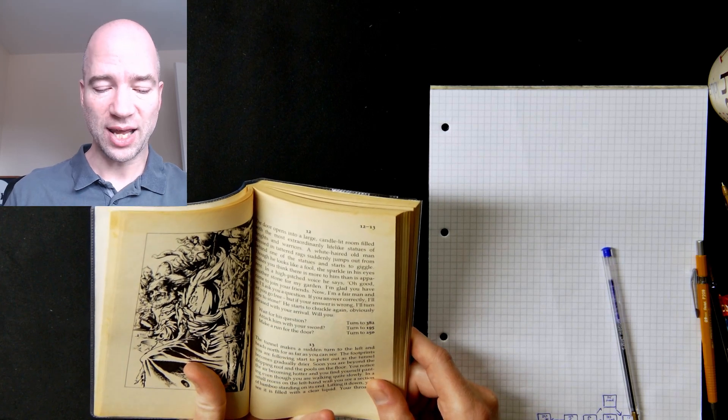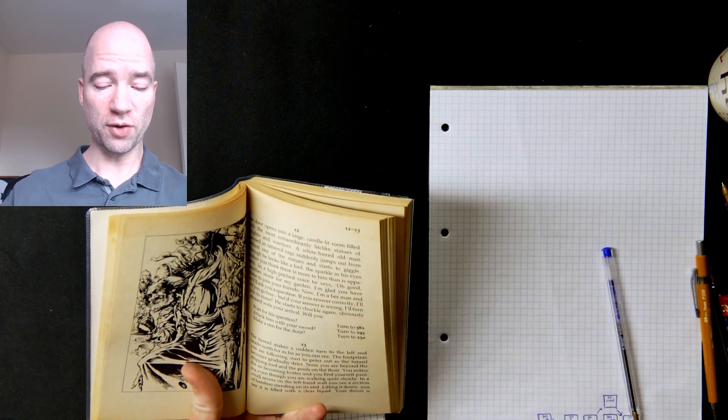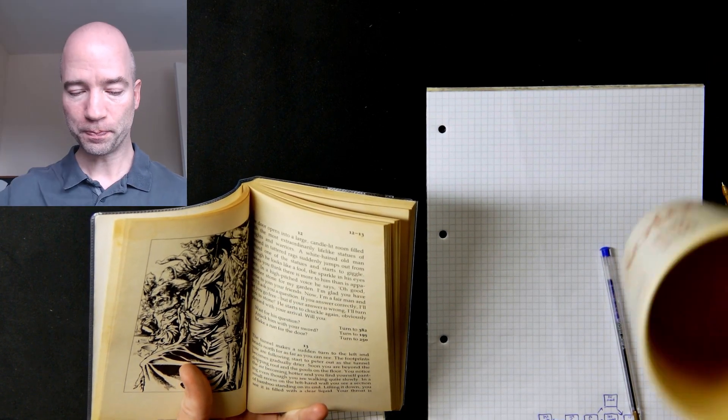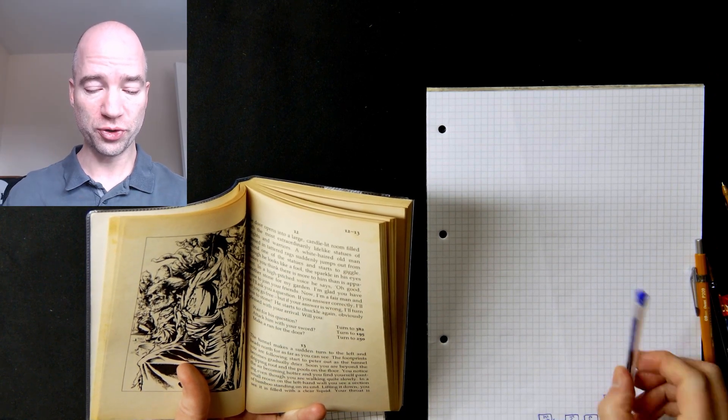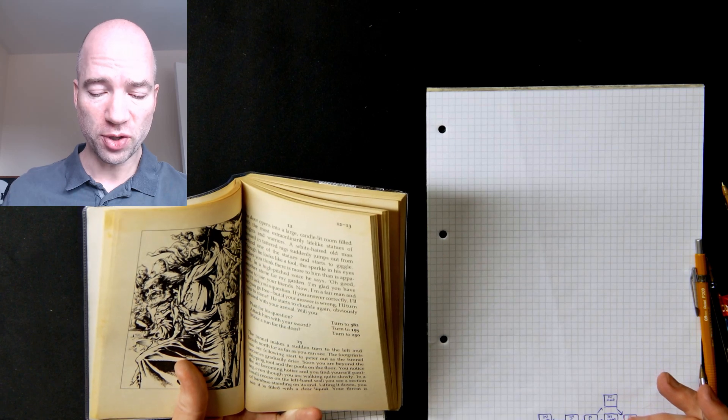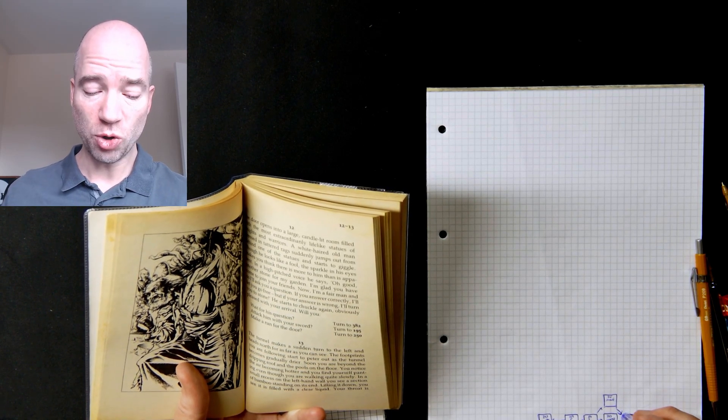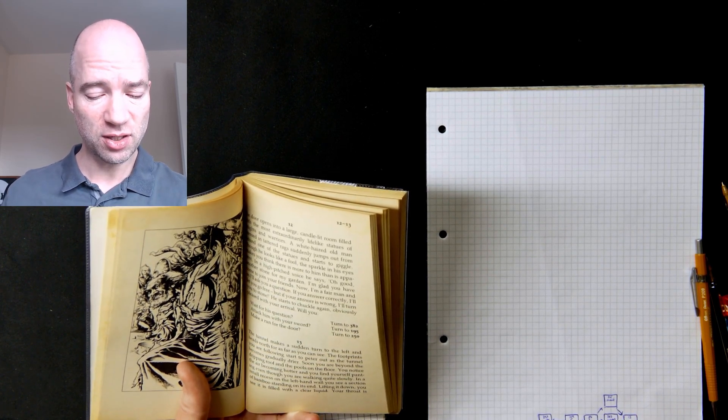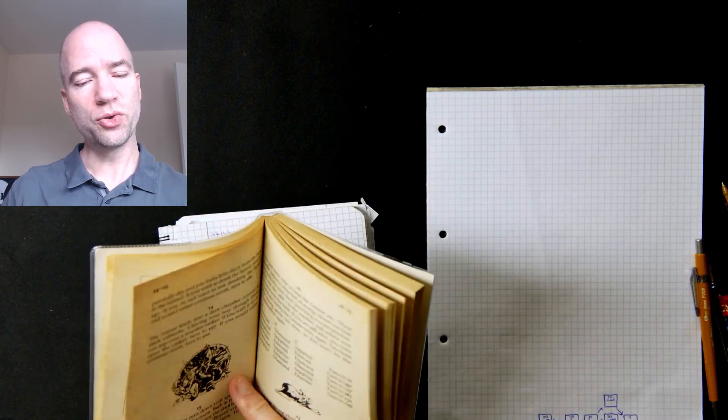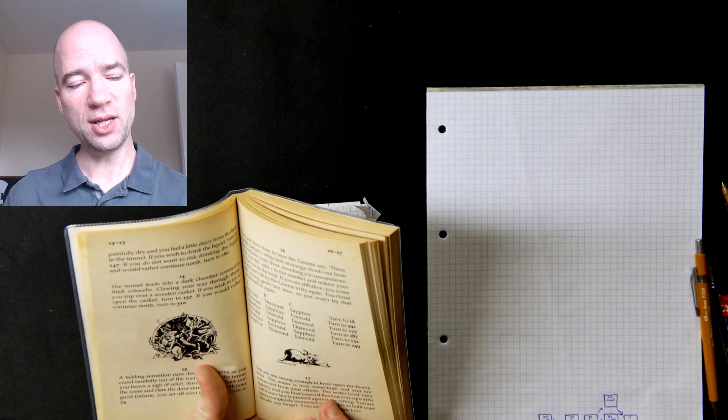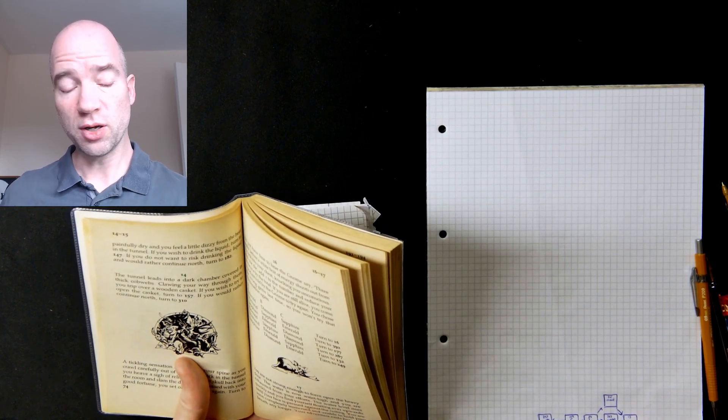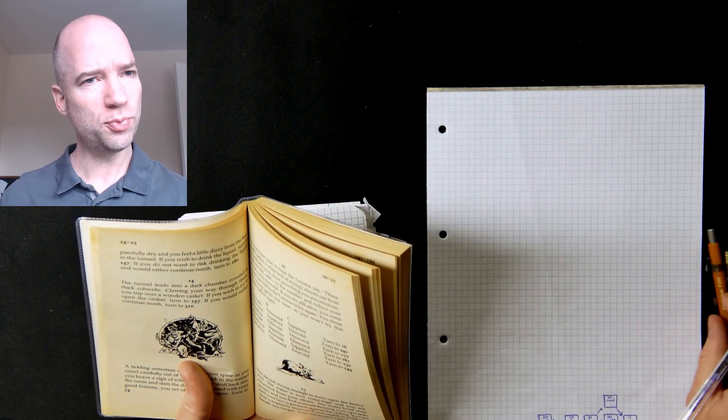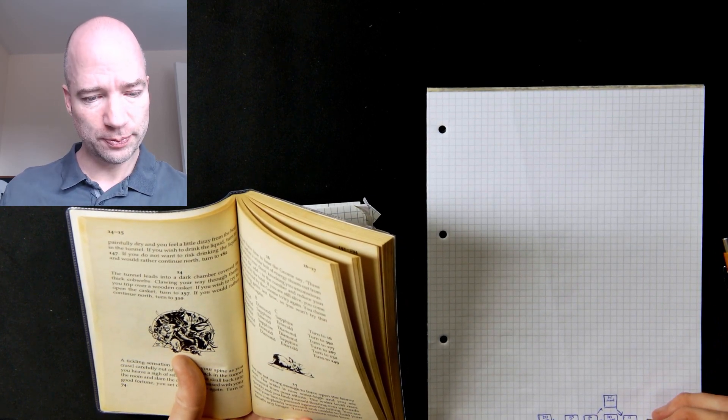The tunnel makes a sudden turn to the left and heads north for as far as you can see. The footprints you are following start to peter out as the tunnel becomes gradually drier. Soon you are beyond the dripping roof and the pools on the floor. You notice the air becoming hotter and you find yourself panting even though you are walking quite slowly. In a small recess on the left hand wall you see a section of bamboo standing on its end. Lifting it down, you see it is filled with a clear liquid. Your throat is painfully dry and you feel a little dizzy from the heat in the tunnel. If you wish to drink the liquid, turn to 147. If you do not want to risk drinking the liquid and would rather continue north, turn to 182. So why don't you bring any water on these things?